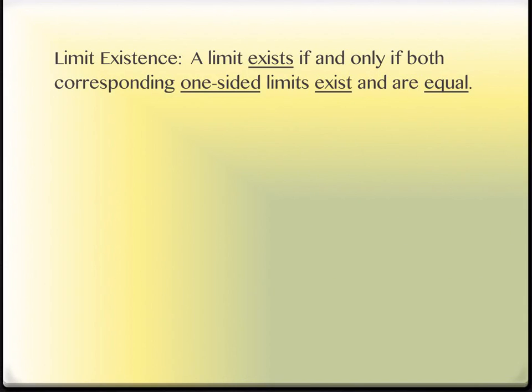All right. A limit exists if and only if the corresponding one-sided limits, that's like the limit from the left and the limit from the right, also exist and are equal. So if the limits from both directions approach the same place, they both approach the same value, then we say that the limit exists for the whole function at that value itself because the one-sided limits exist and they're the same. We're going to do an example with a picture to show when that doesn't always happen because it doesn't have to always happen.